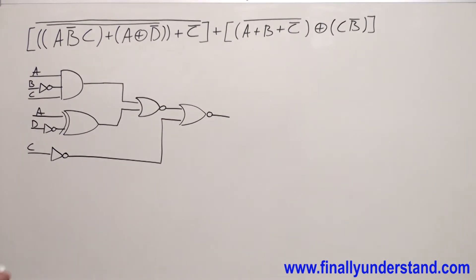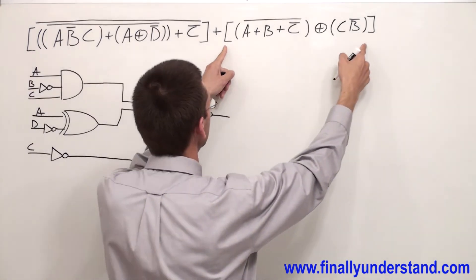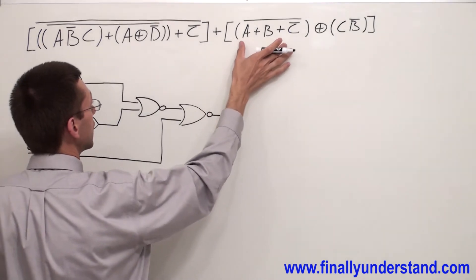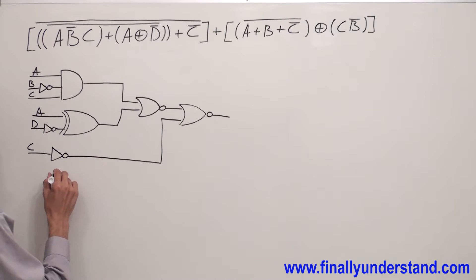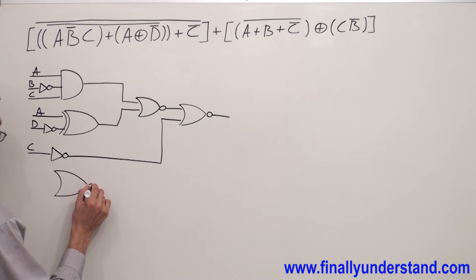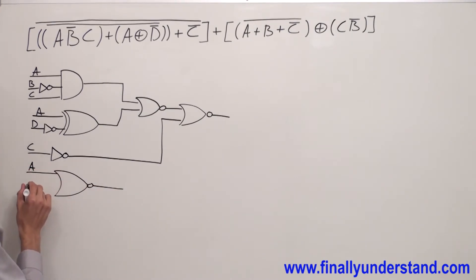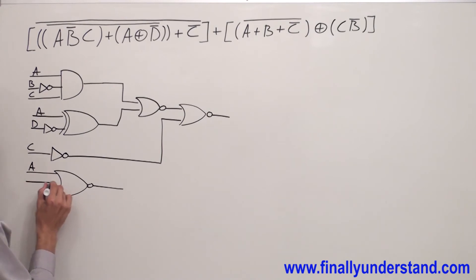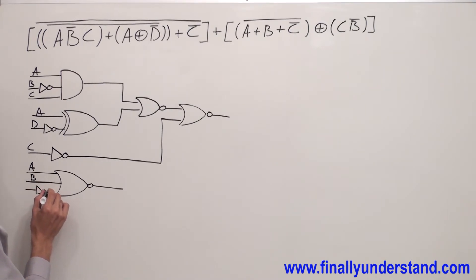We have finished with the very first part of the problem. Let's check the second part. This is nothing else but a 3-input NOR gate. I have A, and I have B, and I have C̄.